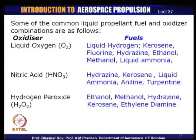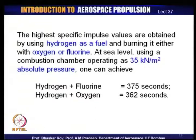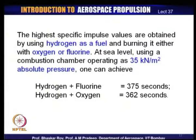Higher specific impulse values are obtained with hydrogen as fuel, burned with either oxygen or fluorine. Using hydrogen with fluorine gives a specific impulse of about 375 seconds. With hydrogen and liquid oxygen, you get 362 seconds — both values obtained using combustion chamber pressure of 35 kilonewtons. With fluorine you can actually get higher specific impulse. These numbers indicate that certain fuels can give higher specific impulse than the hydrogen-oxygen combination.